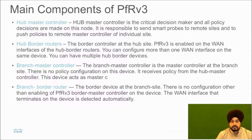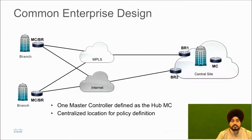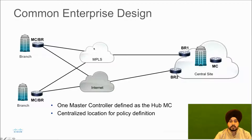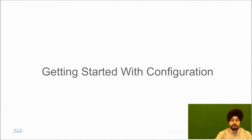In this diagram, the central site is our main site making all policy decisions. We have a master controller and two border routers, along with two links — one MPLS and one Internet. These are just example nomenclatures; you can use any names.